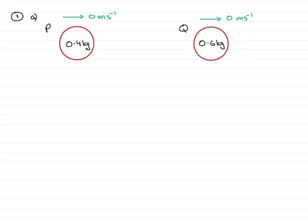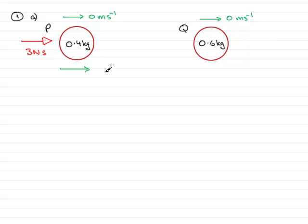P was given an impulse, and whenever I draw impulses on diagrams, I do it with an open arrow. It was given an impulse of 3 Ns, and the question asks us to find the speed it will move away with. It's clearly going to move off in that direction, and I'm going to label that V — so it's moving off at V m per second.